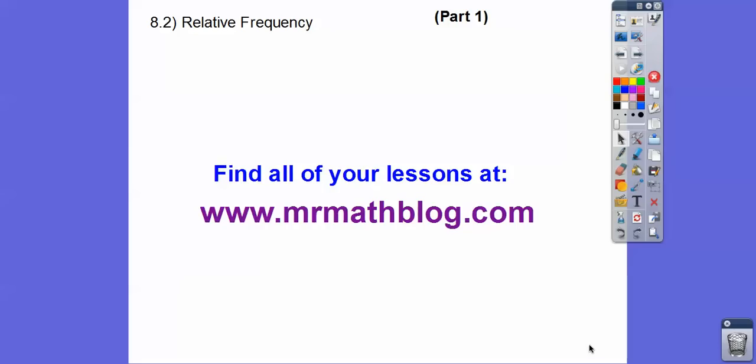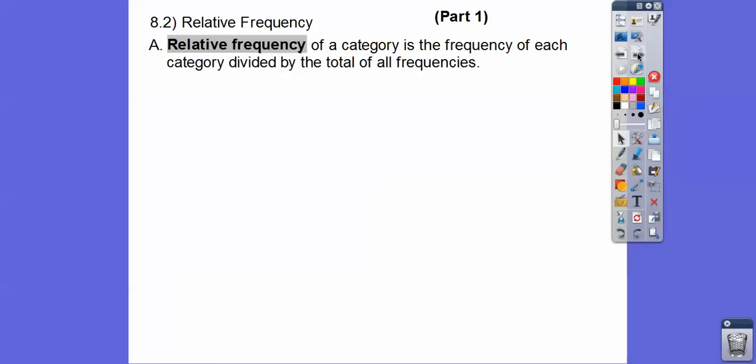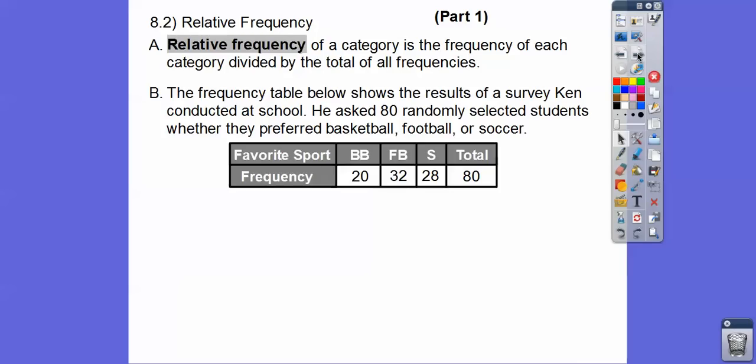This lesson is called relative frequency. I split this up into two parts — I tried doing it in one part and it was just too much, so this will be split up into two days in my class. Relative frequency of a category is just the frequency of each category divided by the total of all frequencies.